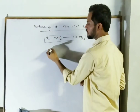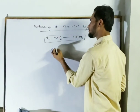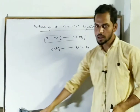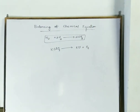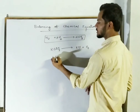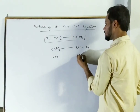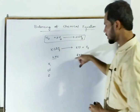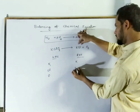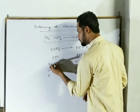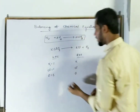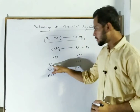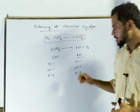Now we move to the next example: KClO₃ converts to KCl and O₂. To balance this chemical reaction, first write LHS on the reactant side and RHS on the product side. In LHS we have potassium, chlorine, and oxygen, and in RHS we also have potassium, chlorine, and oxygen. In LHS we have 1 potassium, 1 chlorine, and 3 oxygen, and in RHS we have 1 potassium, 1 chlorine, and 2 oxygen.